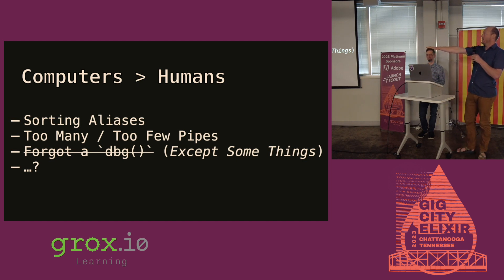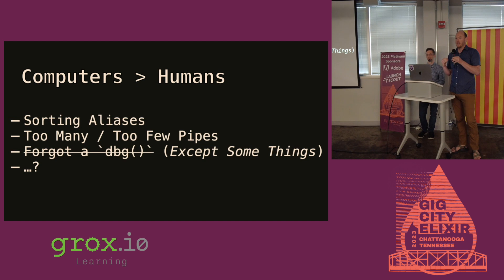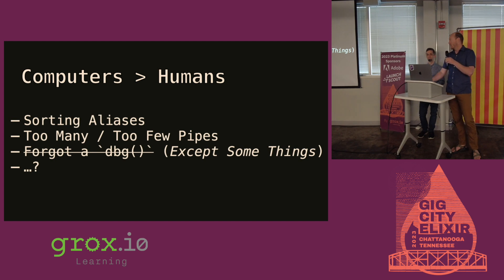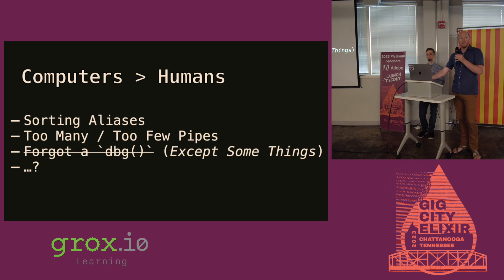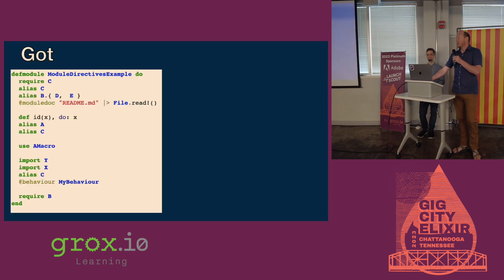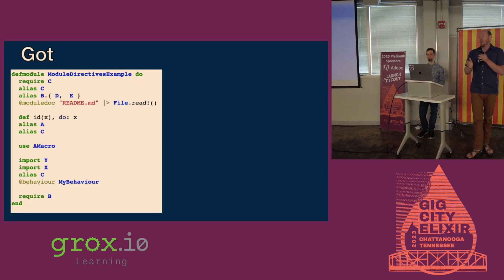That forgot-a-debug-statement one — I don't want the computer to automatically fix that for me. I put that in there because I wanted it. At the end, maybe I want it removed, but I don't want it removed right away. That was intentional and I forgot it. So the computer can't fix all my problems — maybe eventually when we release Styler GPT. But right now, there are some things the engineer still has to do. We want to talk about the things that a computer could do better.